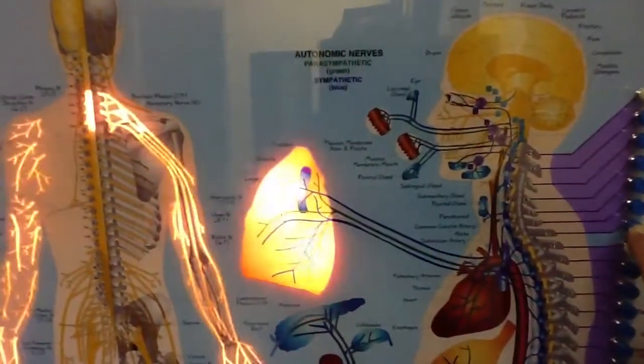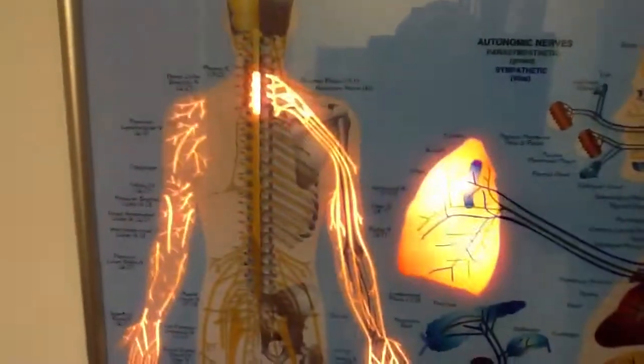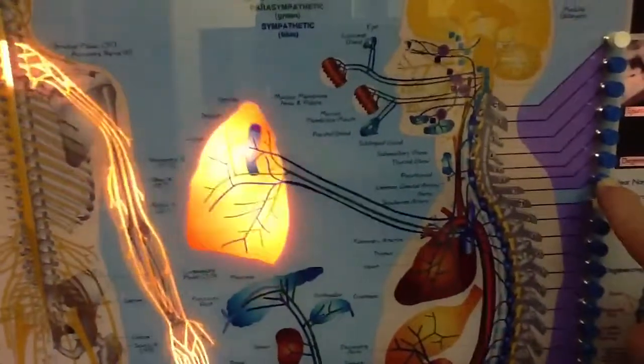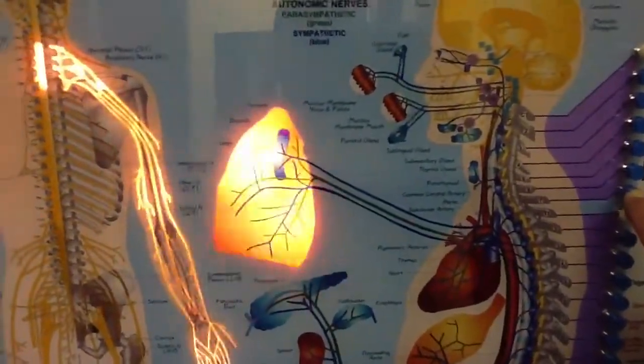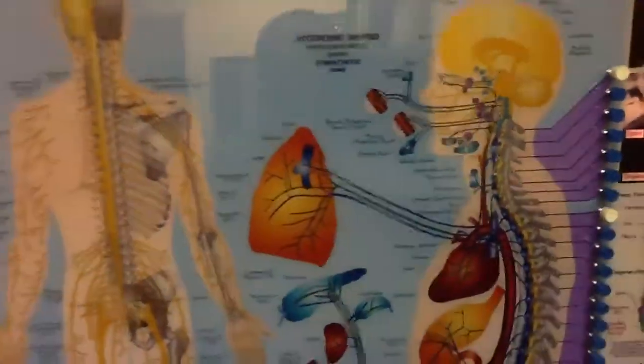So a patient may have a subluxation in C7 and be experiencing the shoulder and arm symptoms as well as maybe some difficulties in their respiration or breathing. So some of that clears up sometimes with an adjustment of C7.